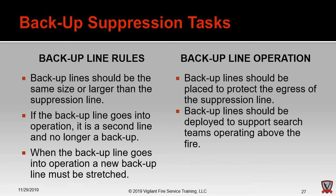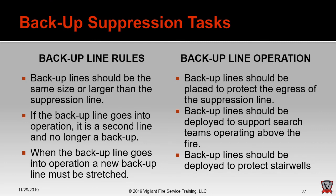Backup lines must be placed to protect the egress of the suppression line — protecting them from nozzle problems, water supply issues, unchecked fire extension behind them, and threats from grades above or below their position. Backup lines should also be deployed for search teams operating above the fire and should always protect stairwells, whether in high-rise or single-family residential settings. There is no such thing as a single-line fire — even if one line controls the fire, a second backup line must always be pulled.